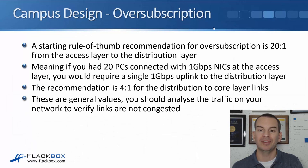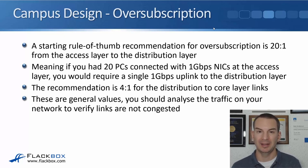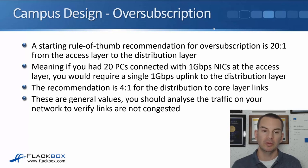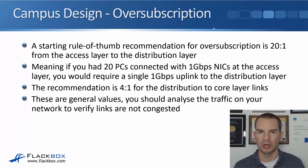A starting rule-of-thumb recommendation for over-subscription in your campus LAN is 20-to-1 from the access layer to the distribution layer — meaning if you have 20 PCs with one gigabit per second NICs, you'd require a single 1 Gbps uplink to the distribution layer. The recommendation is 4-to-1 for distribution-to-core links. Bear in mind those are general values; you should analyze traffic on your network to verify links aren't congested, as it depends on your particular traffic patterns and applications.